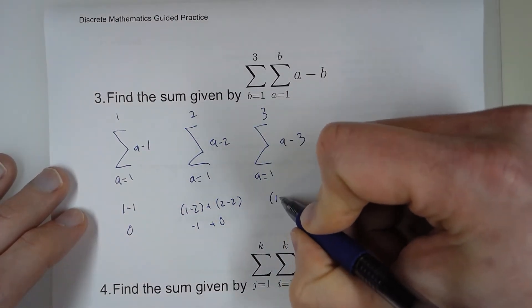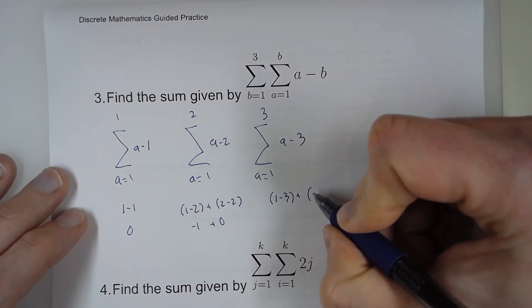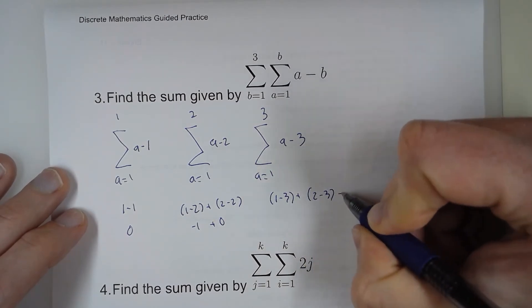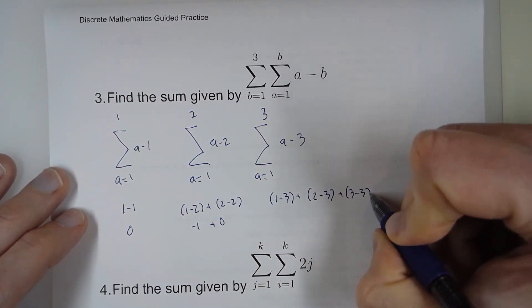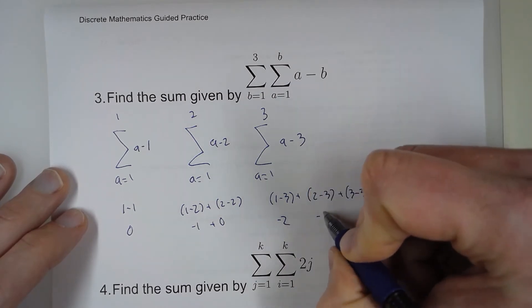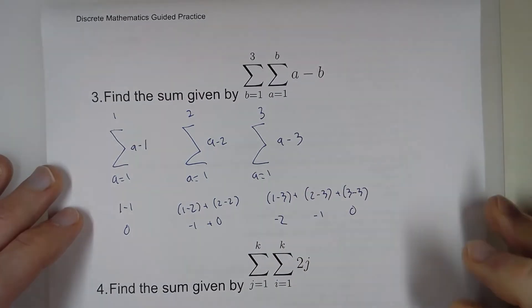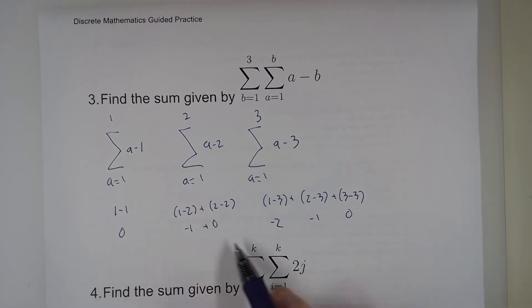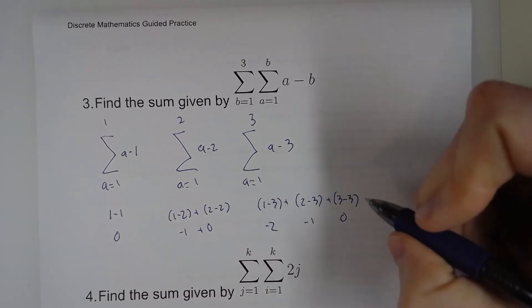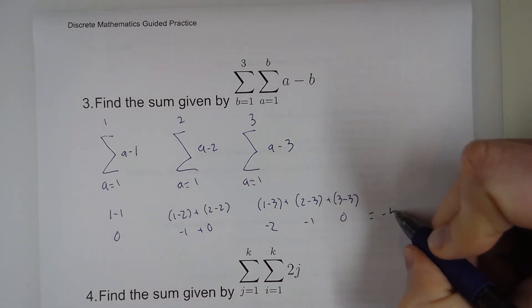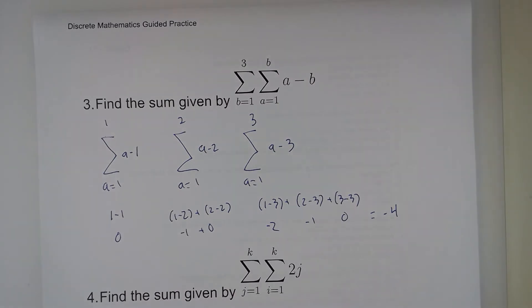And then here I'm plugging in 1, 2, and 3. So 1 minus 3, 2 minus 3, and 3 minus 3. So negative 2, negative 1, and 0. So when I combine all of those, I get a total of negative 4.